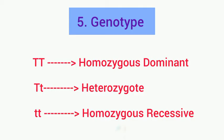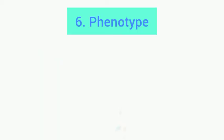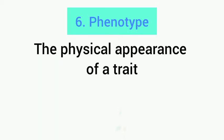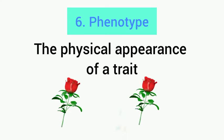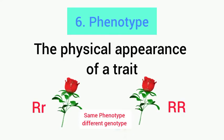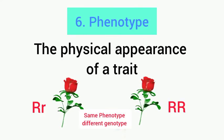Genotype can either be homozygous dominant, heterozygous, or homozygous recessive — these are also key terms you can research on your own. For phenotype, phenotype means the physical appearance of a trait. Look at these flowers: this is the phenotype of the flower, but their genotypes are different — one is homozygous dominant and the other is heterozygous.